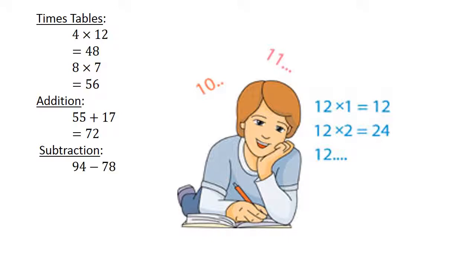Subtraction. 94 minus 78 is equal to 16. Division. 11 divided by 11 is equal to 1. Decimal addition.